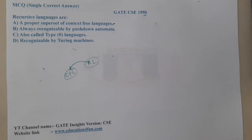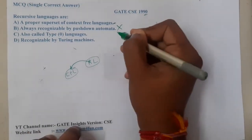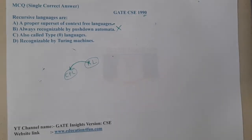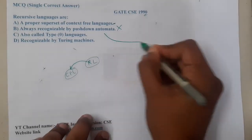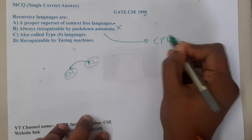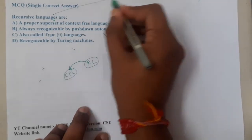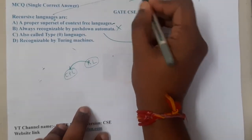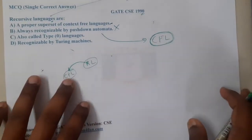Moving on to option B, option B says that recursive languages are always recognizable by pushdown automata. That's a bit of a joke, right? For pushdown automata we are having context free languages, not recursive languages. Recursive languages are for Turing machines.